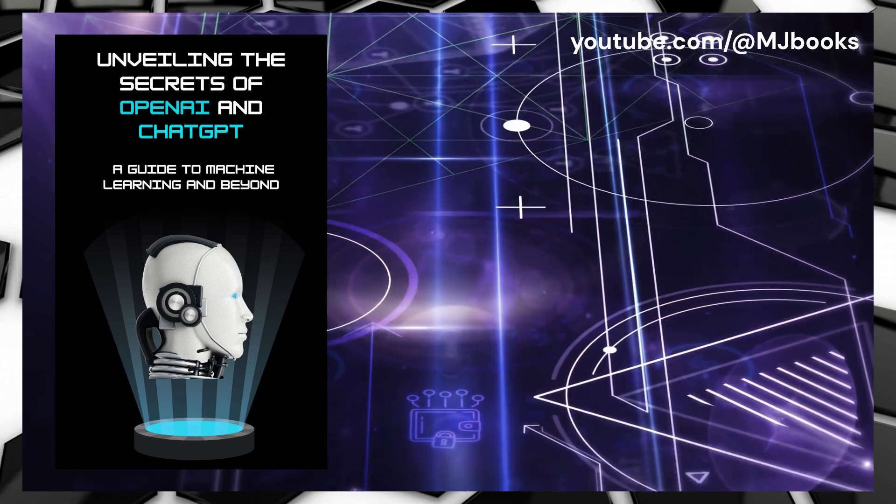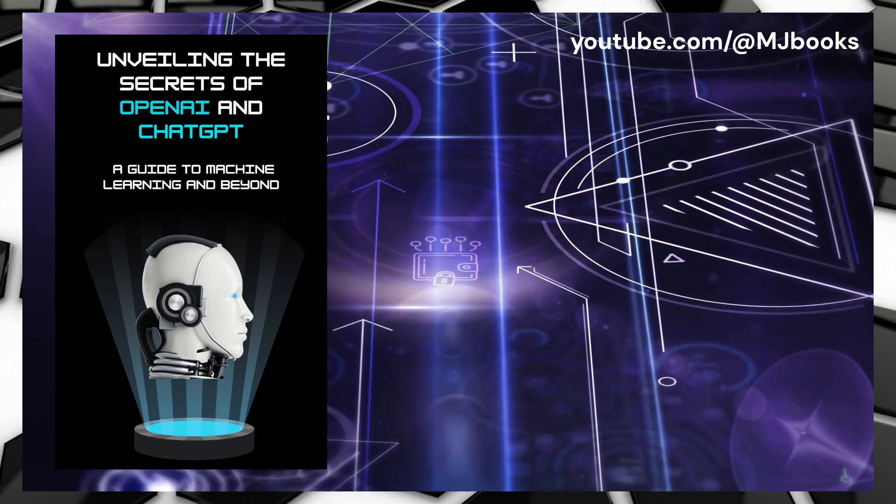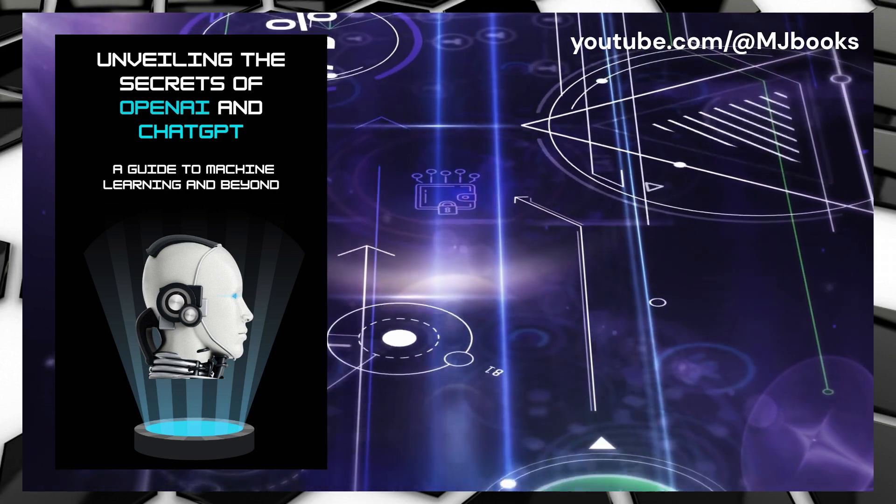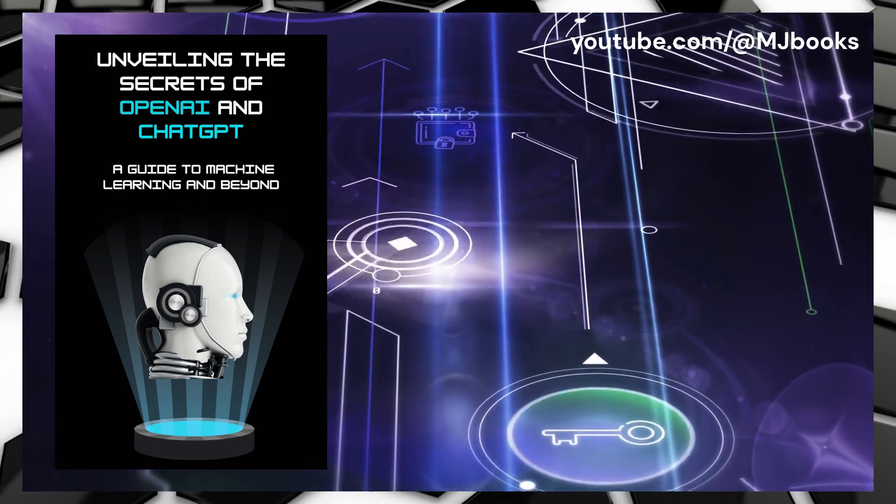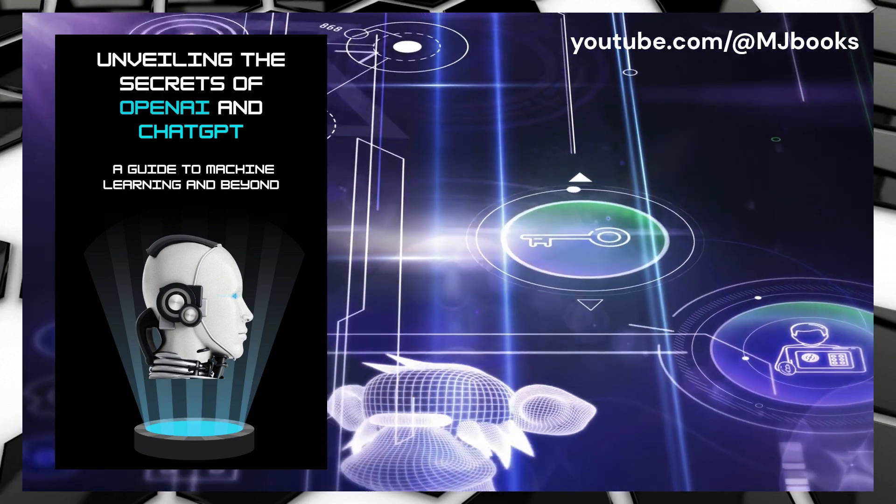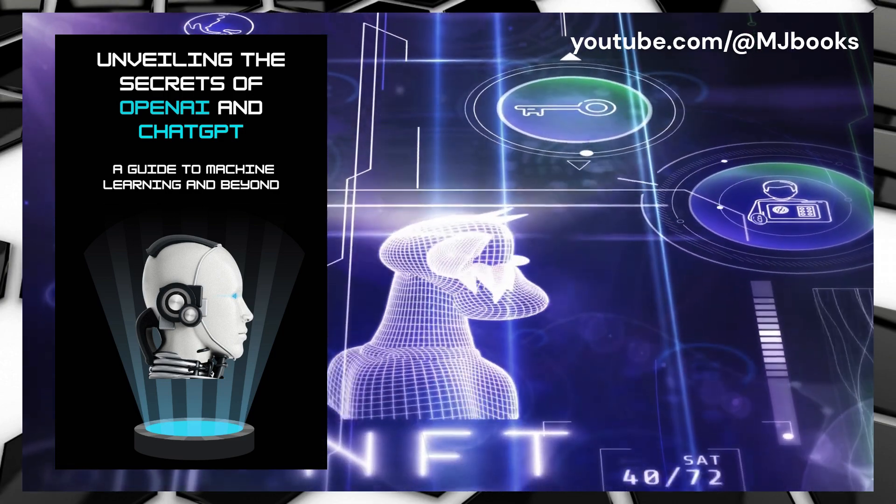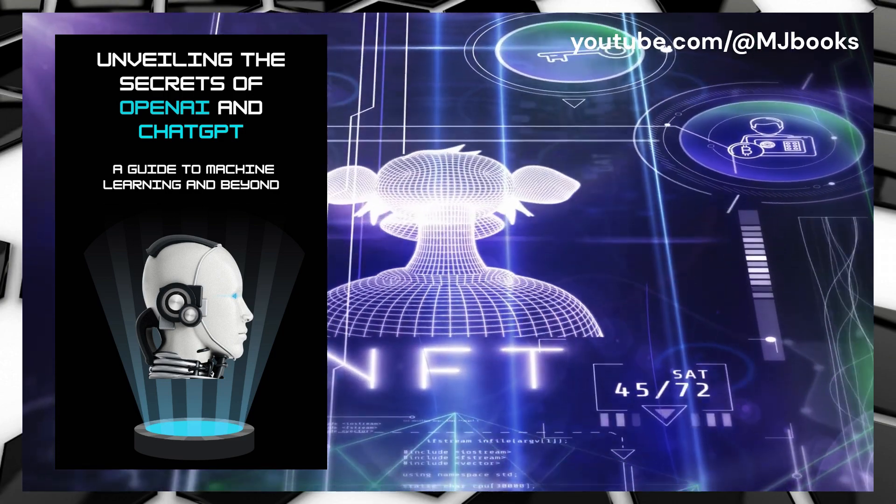OpenAI's chatbot GPT 3.5 is a state-of-the-art model that has been trained on a massive dataset of human language data. This dataset includes text from the internet, including social media, news articles, and other sources. To train the model, OpenAI used a technique called deep learning, which involves training a neural network to recognize and generate patterns in the data.